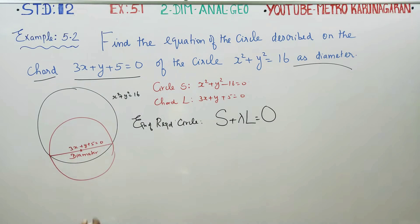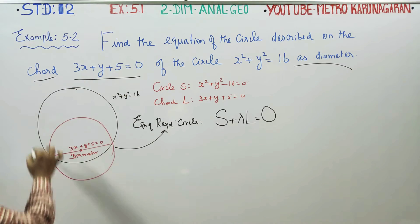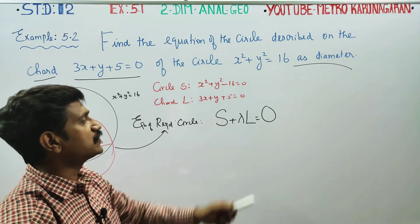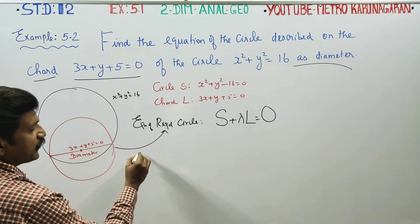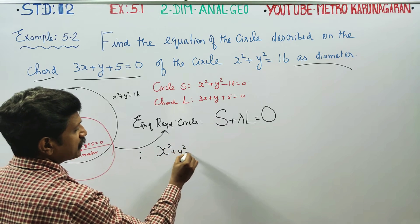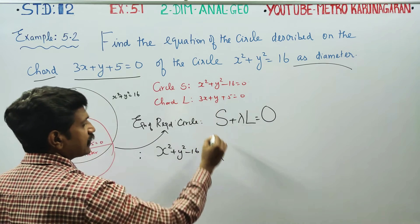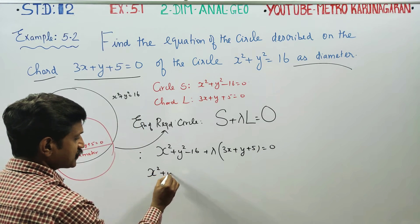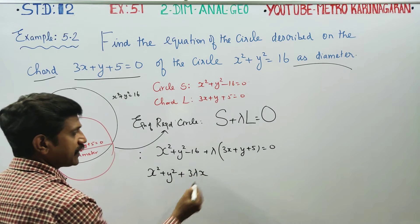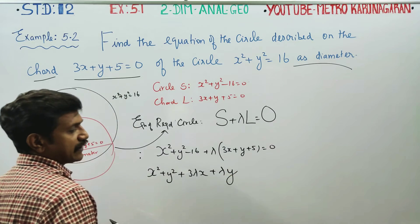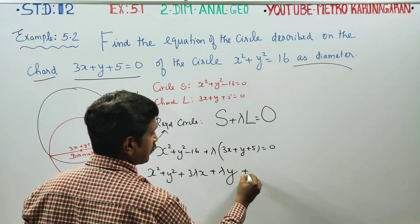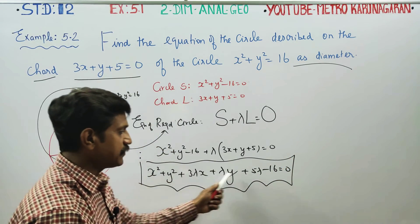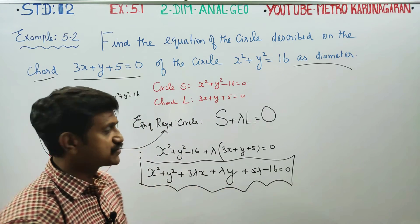This is the equation of the required red color circle. The formula is: main circle equation plus λ into chord equals 0. So the equation becomes x² + y² - 16 + λ(3x + y + 5) = 0. This is the equation of the required circle.